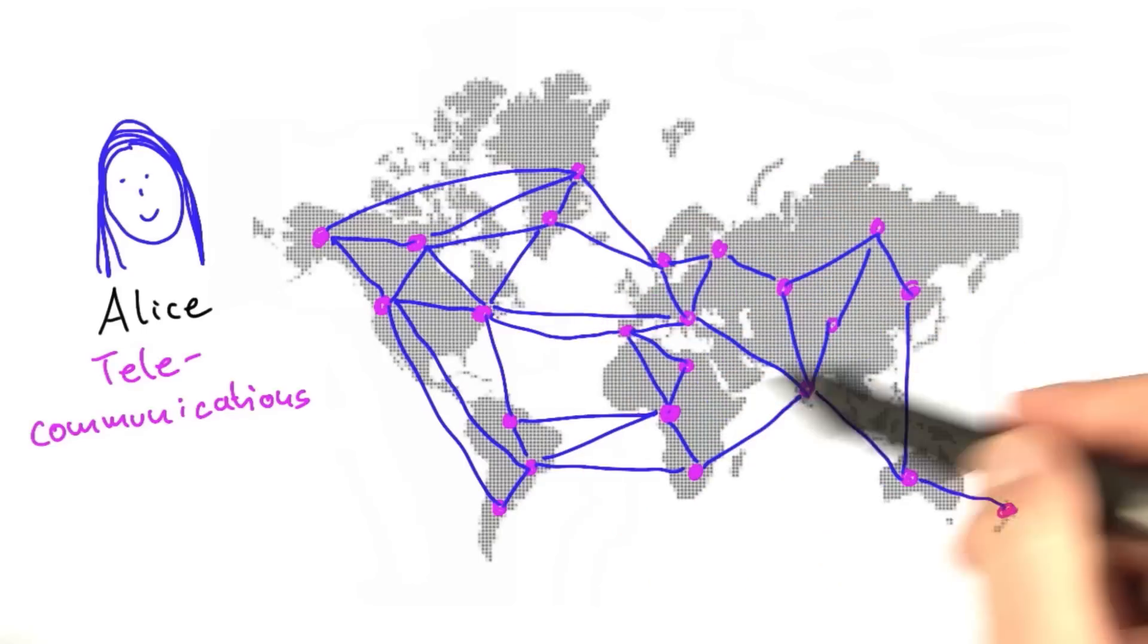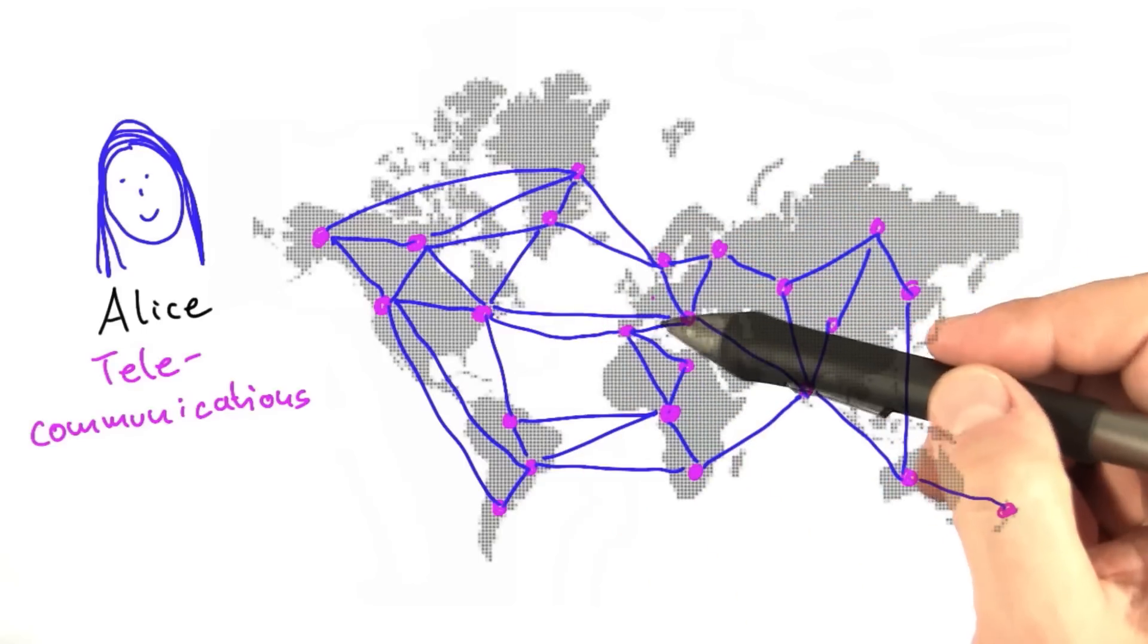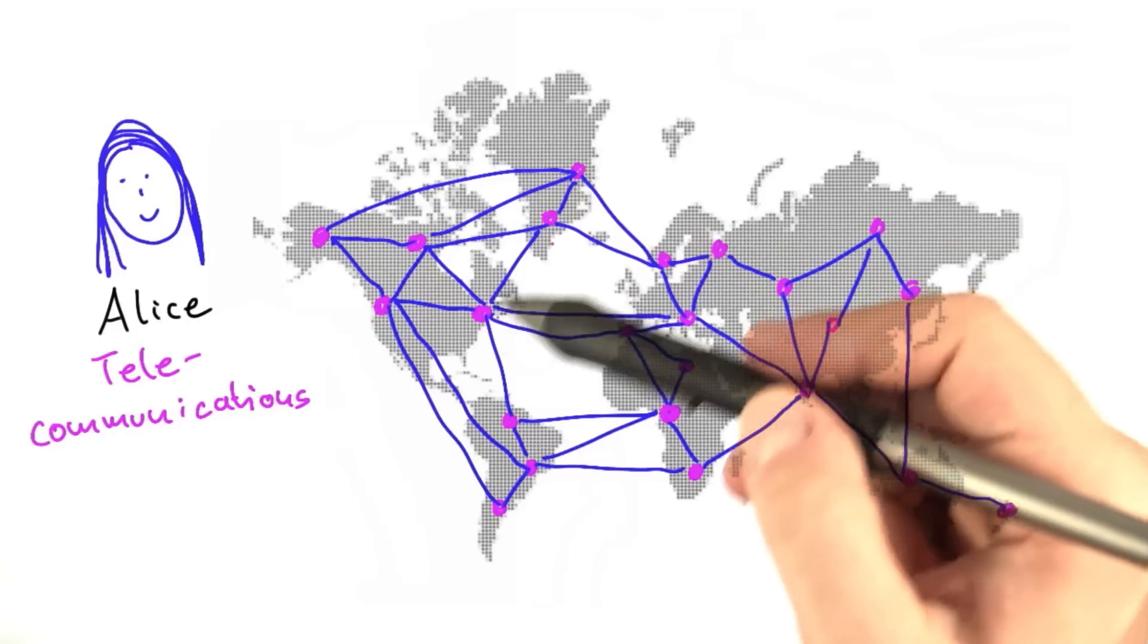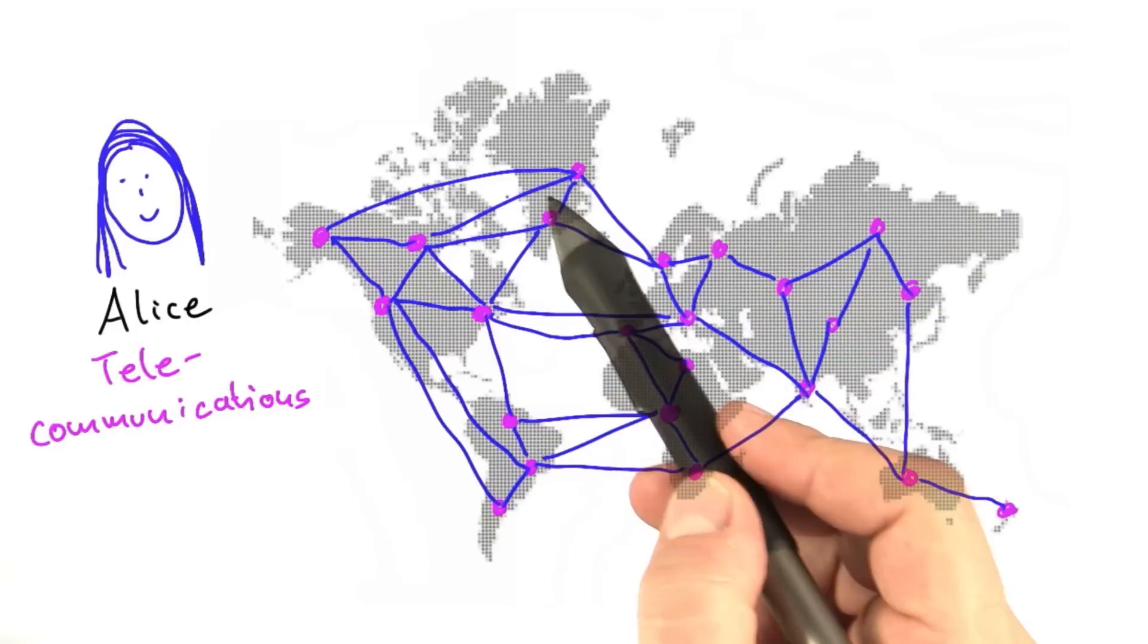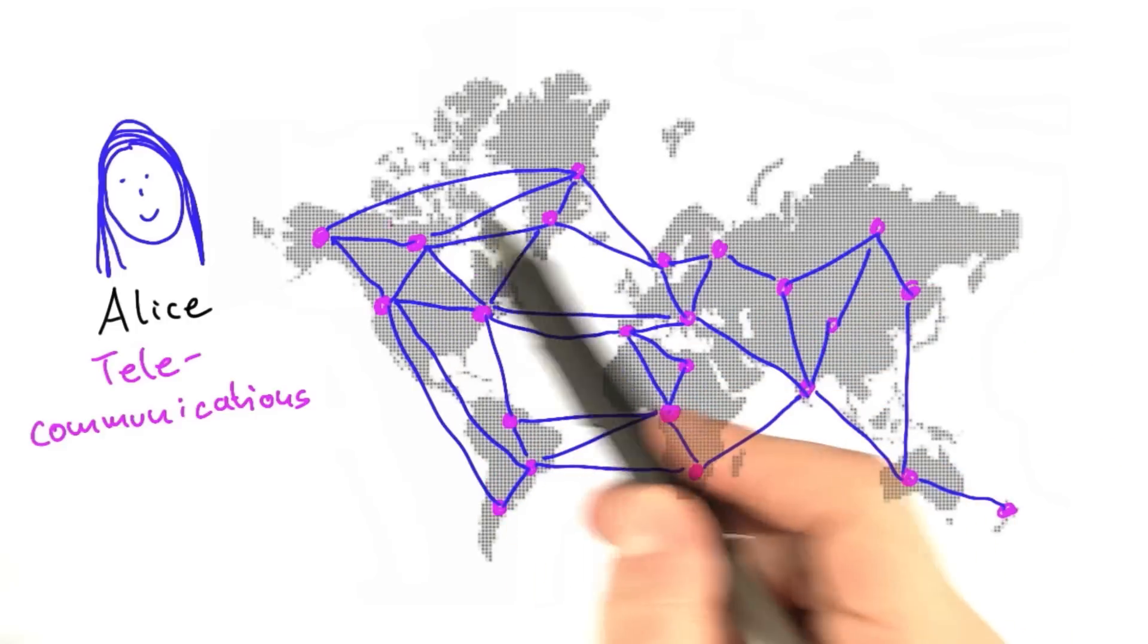For the company that Alice is working for, it's very important to check the integrity of the whole network, which basically means you have to check if every single cable is working.